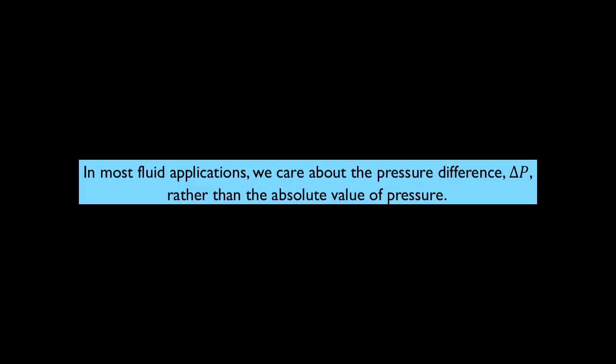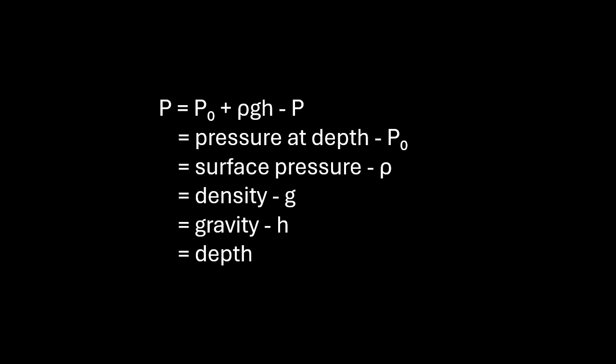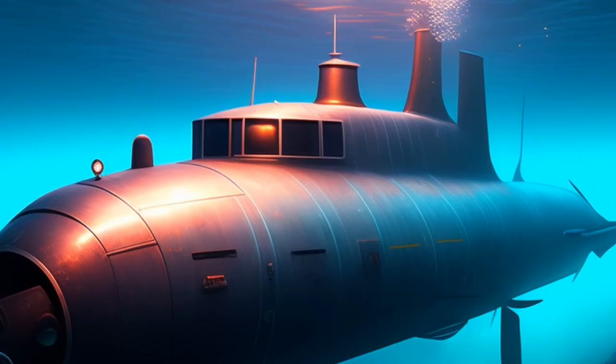This is due to the weight of fluid above. In most fluid applications, we care about the pressure difference, rather than the absolute pressure. And the pressure difference absolute equal to the gauge pressure difference. And this is the formula of how getting the pressure at any point we know. Like pressure at depth minus the pressure at node, surface pressure minus rho, density minus g, gravity minus h equal depth. Okay, that's why submarines have thicker walls as they go deeper.